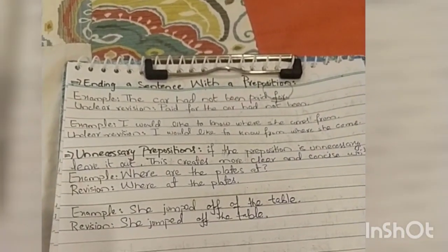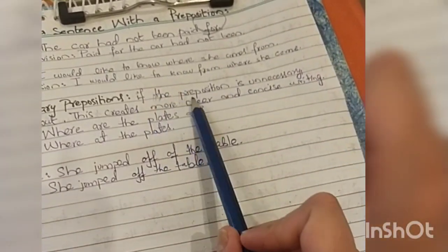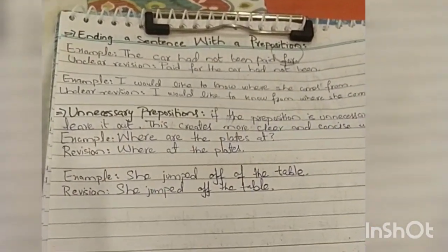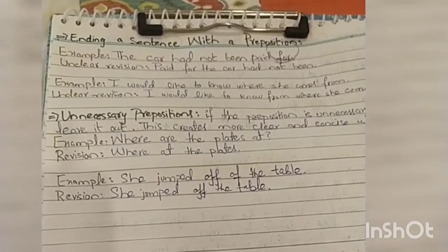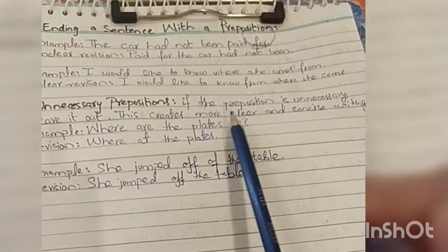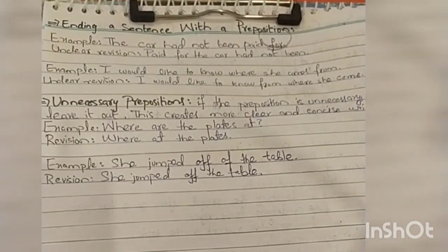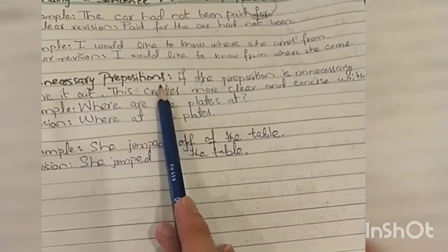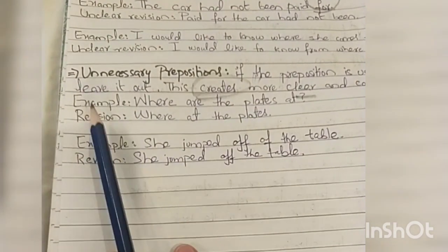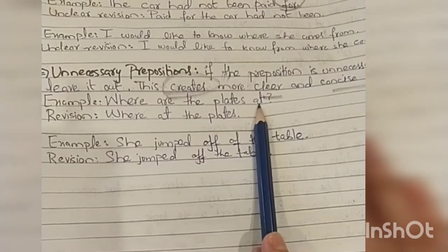Then there are some unnecessary prepositions which we use at the end of different sentences. If the preposition is unnecessary, leave it out. This creates more clear and concise writing. When you remove those prepositions, it creates clear and concise writing.